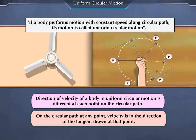On the circular path at any point, velocity is in the direction of the tangent drawn at that point.